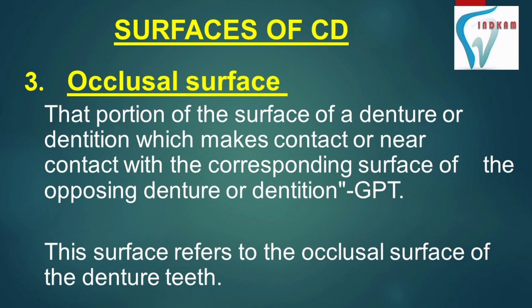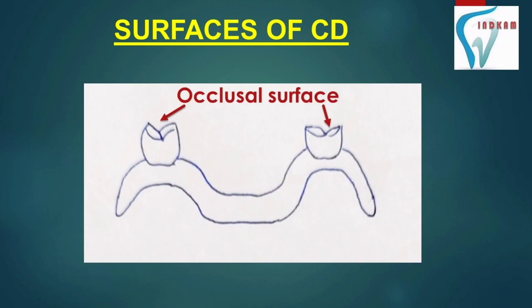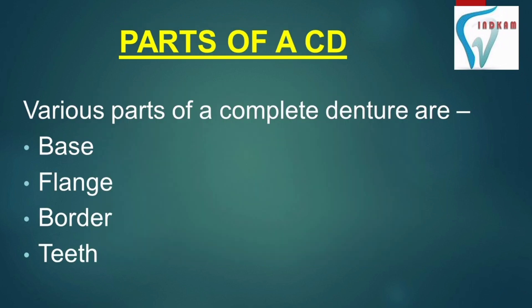The third surface is the occlusal surface. The occlusal surface is that portion of the surface of a denture or dentition which makes contact or near contact with the corresponding surface of the opposing denture or dentition. You can see the occlusal surfaces in the diagram.